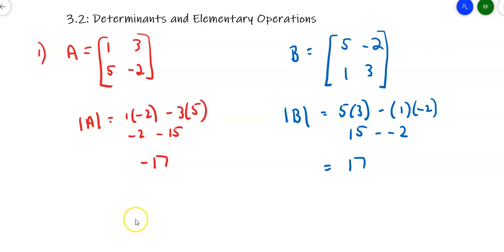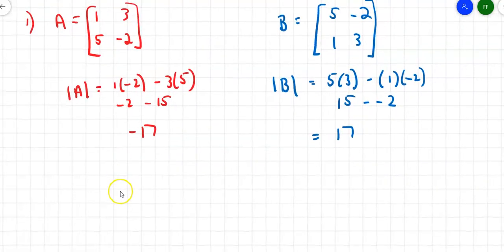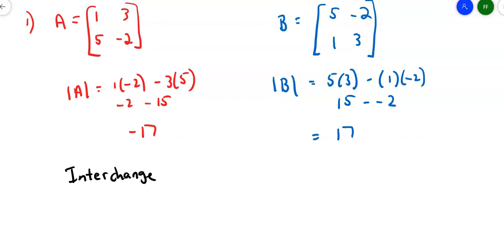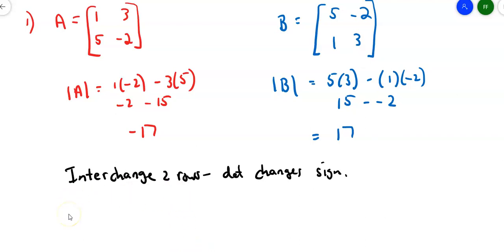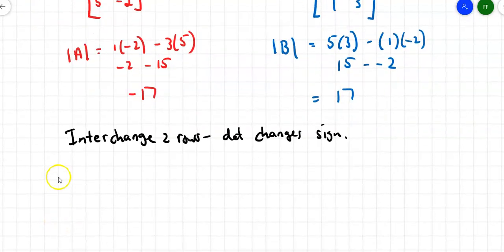It turns out that's a rule: if you interchange two rows of a matrix, the determinant changes sign. So it's not just something that happened to work out in this one case — it really is true. Interchange two rows, and the determinant changes sign.